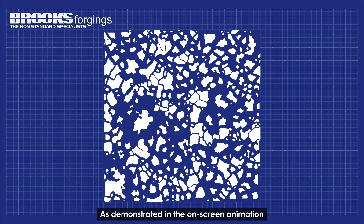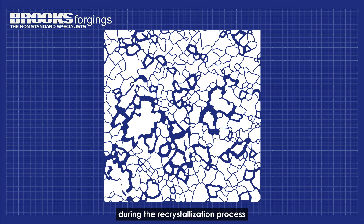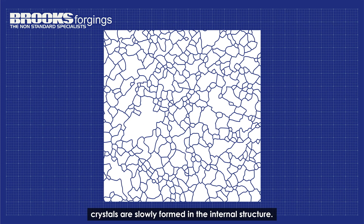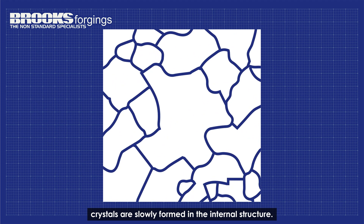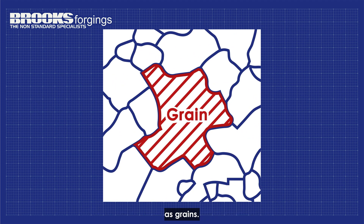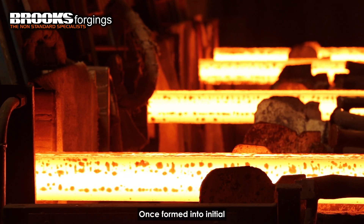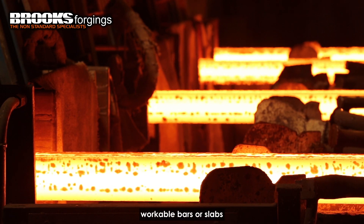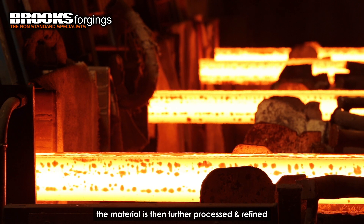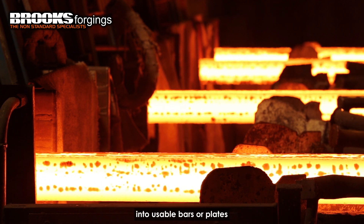As demonstrated in the on-screen animation, during the recrystallization process, as the molten metal solidifies, crystals are slowly formed in the internal structure. These are commonly referred to as grains. Once formed into initial workable bars or slabs, the material is then further processed and refined.